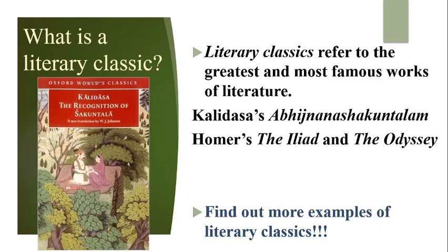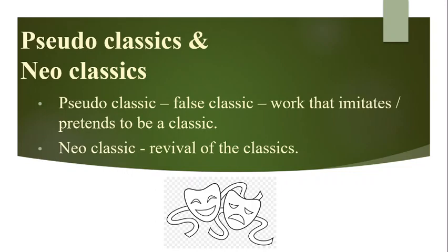Can you find out more examples of literary classics? Now, pseudo-classics and neoclassics. What is a pseudo-classic? The word pseudo itself means fake or false. A pseudo-classic is a work that imitates or pretends to be a classic. Some critics consider the works of French writer Voltaire as pseudo-classics, which lack the qualities of a classic. As for neoclassics — I am sure you are familiar with neoclassics, being students of literature — neo means new, so neoclassics means revival of the classics. It is an attempt to bring back the ancient, glorious literary tradition. Neoclassicism coincided with the 18th century age of enlightenment.